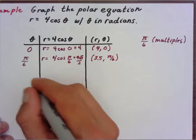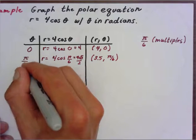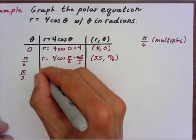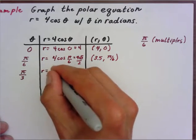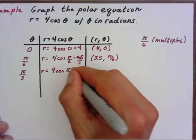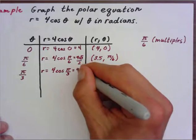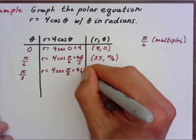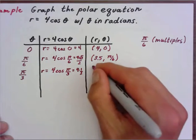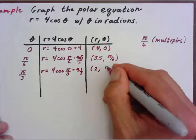Next I go to pi over three — that's 60 degrees. r equals four times cosine of pi over three. Now cosine of pi over three is one-half, so it's four times one-half, which is two. So you're going to have the point (2, π/3).